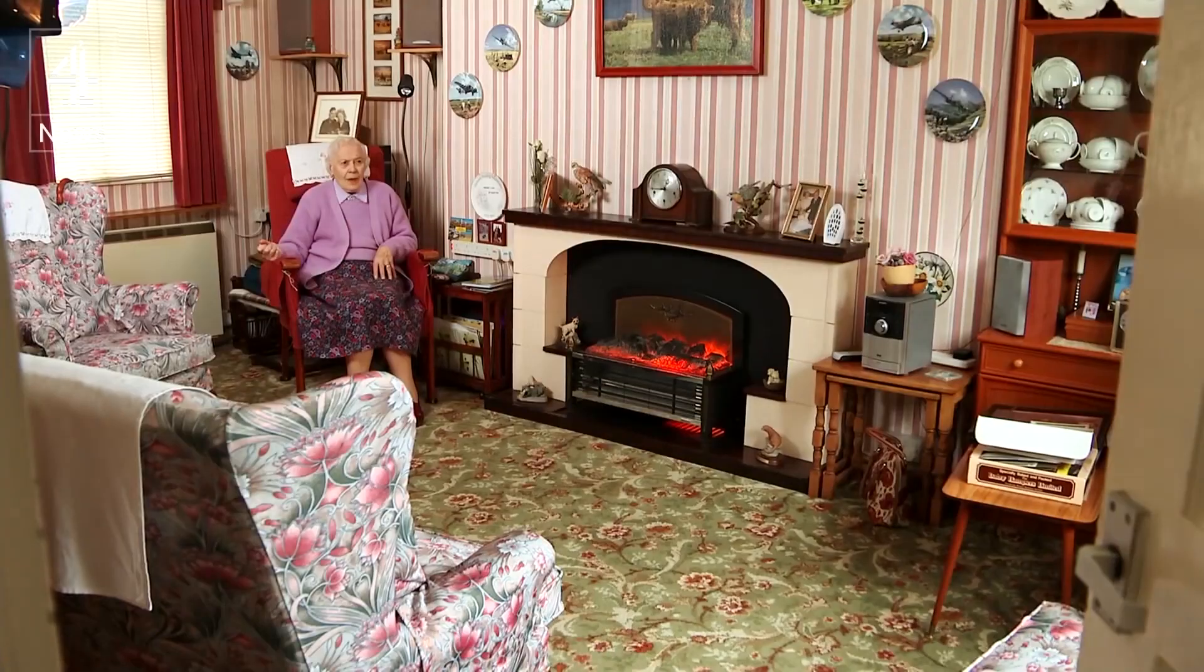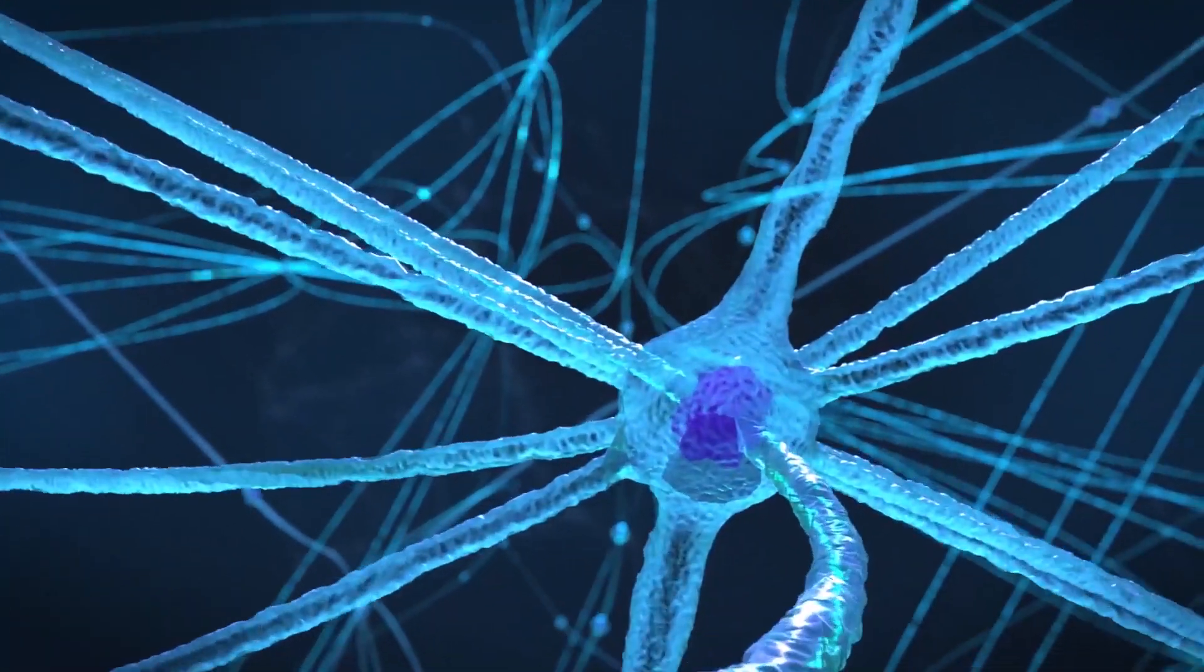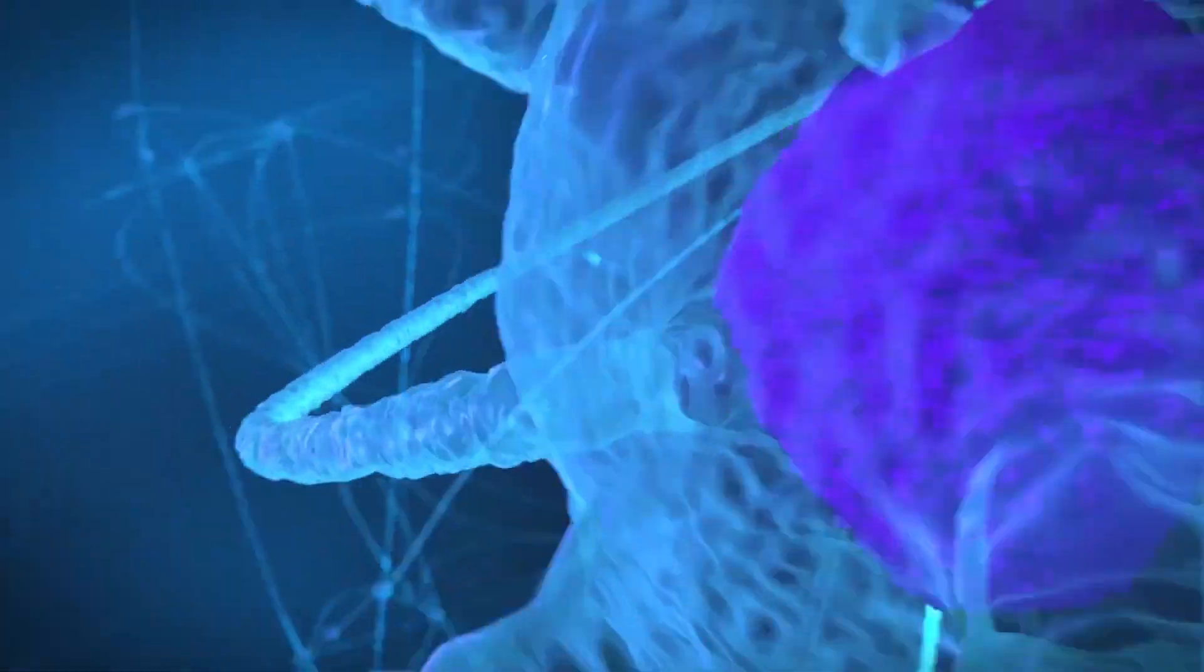Internal and external factors can affect the speed of aging. For example, UV radiation increases the speed of aging in skin cells. And some rare human mutations can cause accelerated aging diseases. Ultimately, different parts of the body age at different times, but eventually all cells move into this senescent state, or a zombified state.